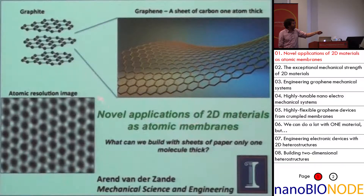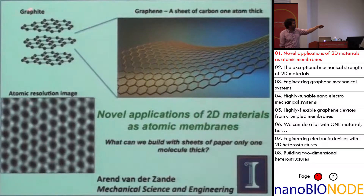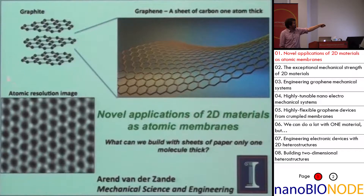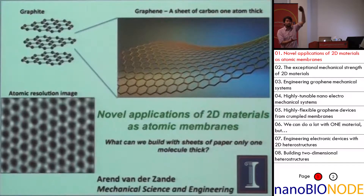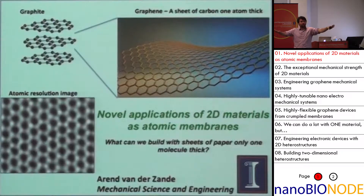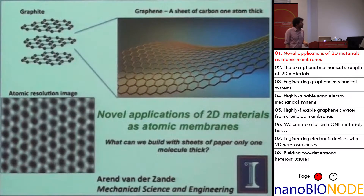I think everyone here already knows what graphene is. It's a single layer of carbon atoms, where if you have graphite, it's a stack of sheets of carbon atoms. You can think of this as a stack of paper, and this as a single sheet of paper. When you pull one of these layers out, it actually behaves completely differently than the bulk stack of material — just like if you take a single piece of paper out of the stack, it becomes very flexible.